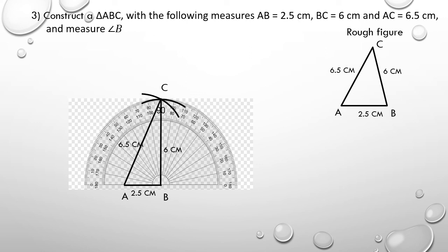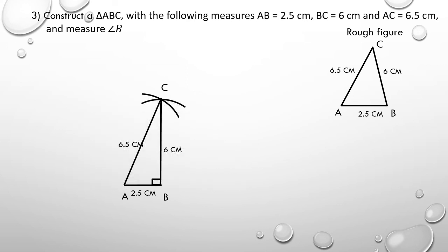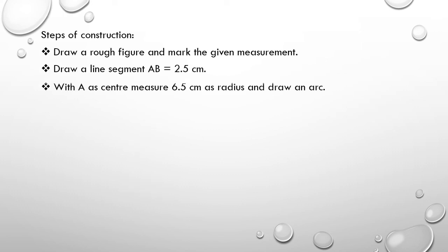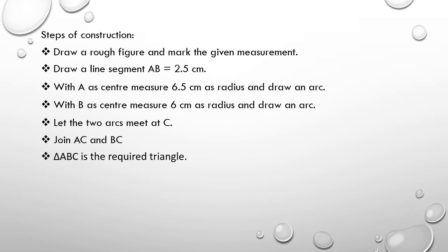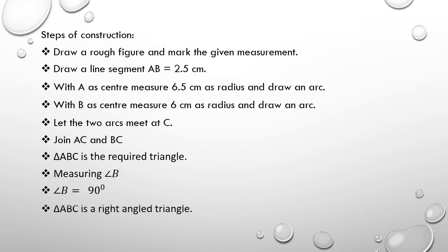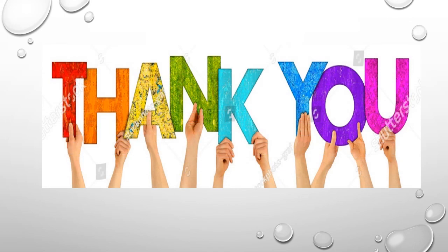Now take your protractor, place it on point B, and measure — you can see that angle B is equal to 90 degrees. Hence this is the required triangle. Again, write the steps of construction in the form of instruction. Thank you for watching the video — if you like the video, hit the like button.